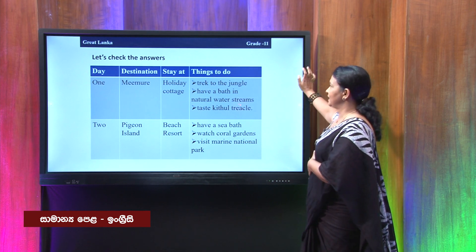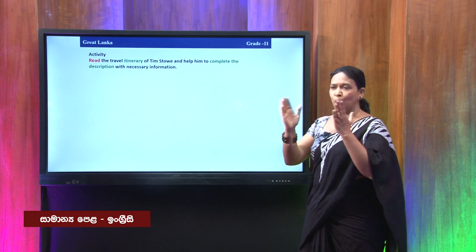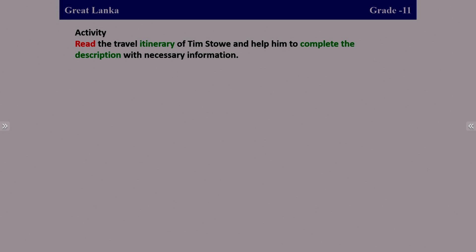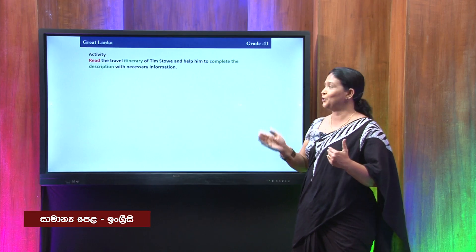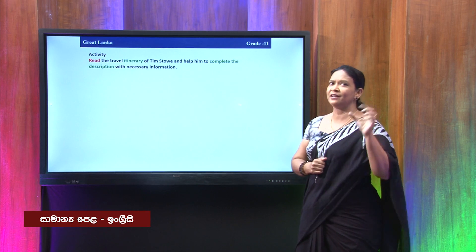So far we read a dialogue and changed the information into an itinerary. Now let's see what we do next. This time, you are reading an itinerary — part of an itinerary — and you are asked to complete a description. What did we do earlier? We read a dialogue and completed an itinerary. Now you read an itinerary and change that into a description. As usual, I am not going to give you the itinerary first. Instead, let us look at the description first so we have an idea of what to find in the itinerary.